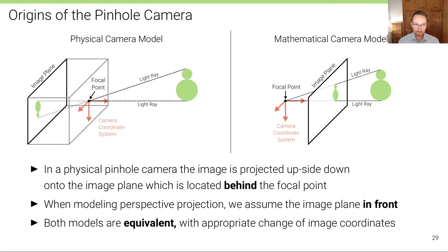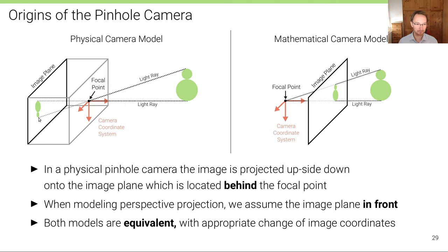The most basic physical pinhole camera can be described as a box with a little hole in one wall. That hole lets light pass through only in the direction the light is coming from, so a point in the scene has its light pass through the hole and hit the image sensor at exactly one location. The image is projected upside down onto the image plane behind this hole — the focal point — through which all light rays must pass.